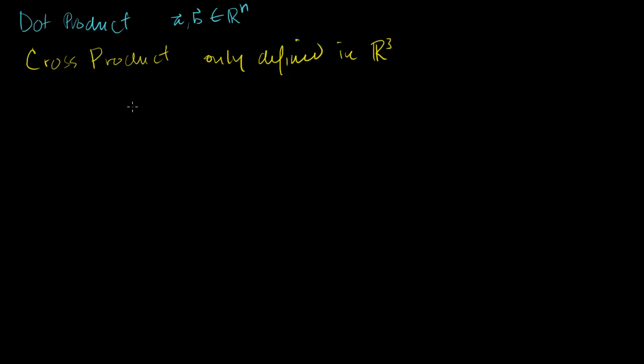And the other major difference is the dot product, and we're going to see this in a second when I define it for you, the dot product results in a scalar. When you take the dot product of two vectors, you just get a number. But with the cross product, you're going to see that we're going to get another vector. And the vector we're going to get is actually going to be a vector that's orthogonal to the two vectors that we're taking the cross product of.